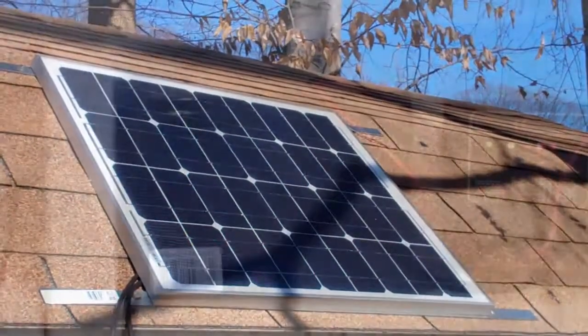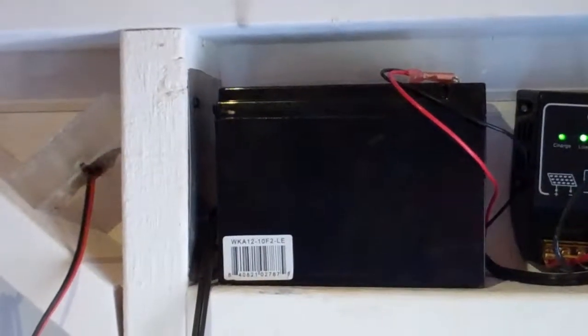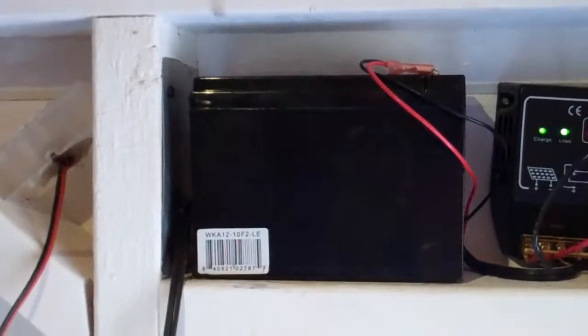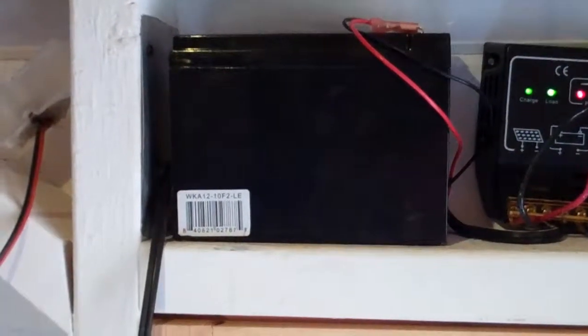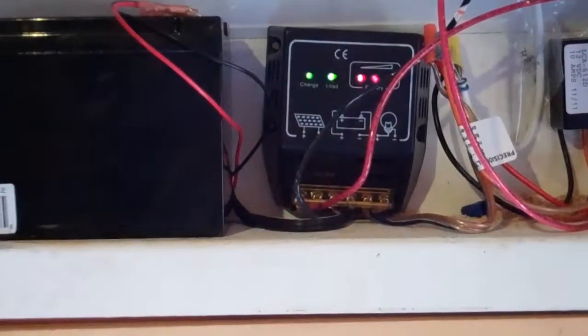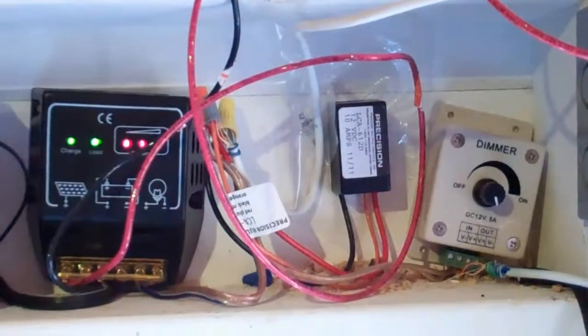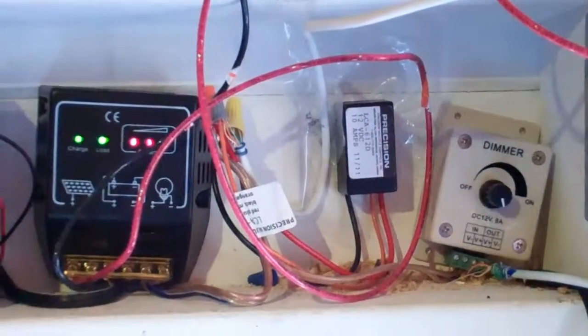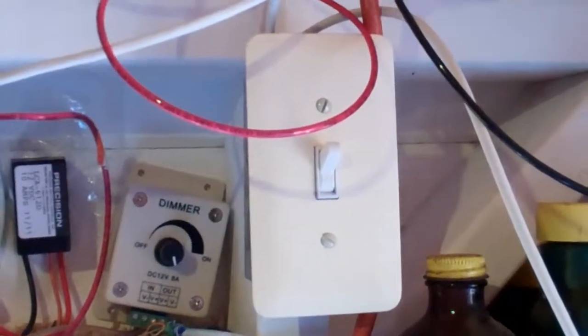The astute observer will remember our previous system. Here is a 7 amp-hour, 12 volt emergency lighting battery, our solar charger and regulator. New in this episode: a photo cell. You'll recognize the dimmer, and here's a typical light switch.